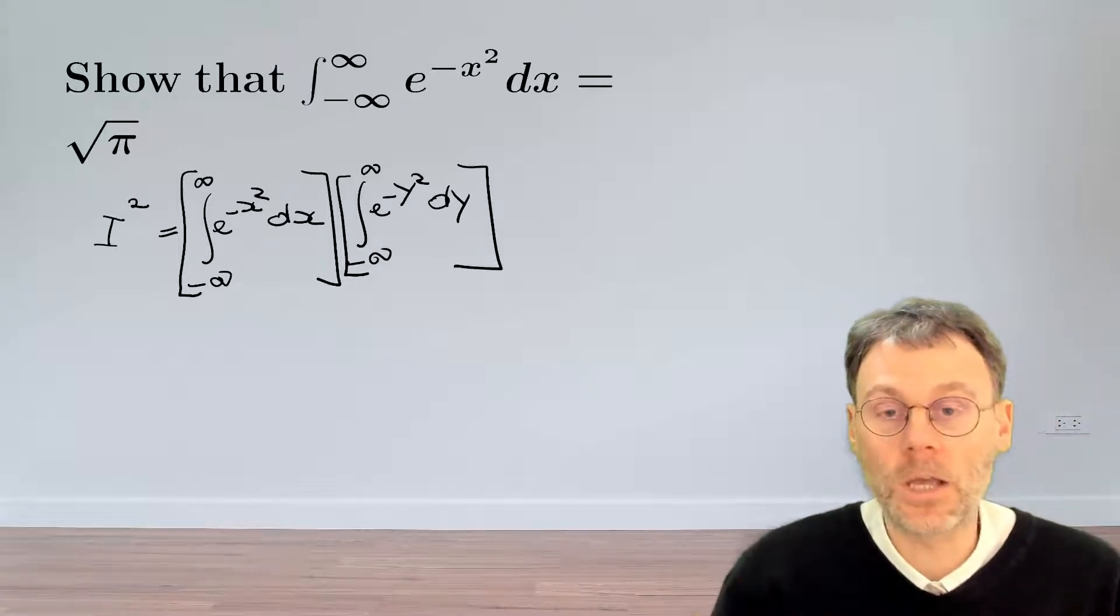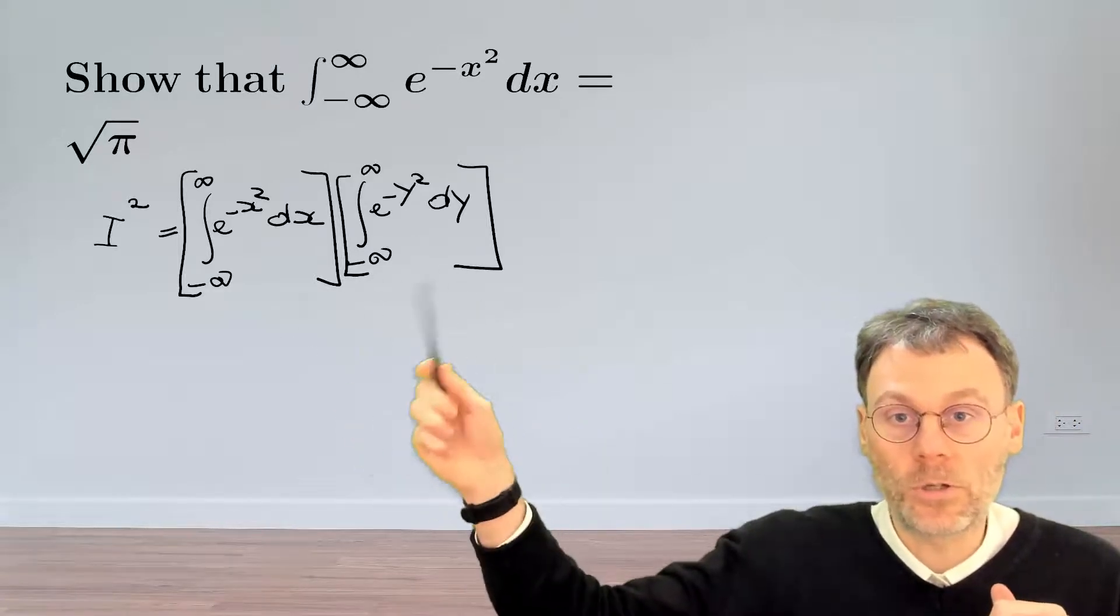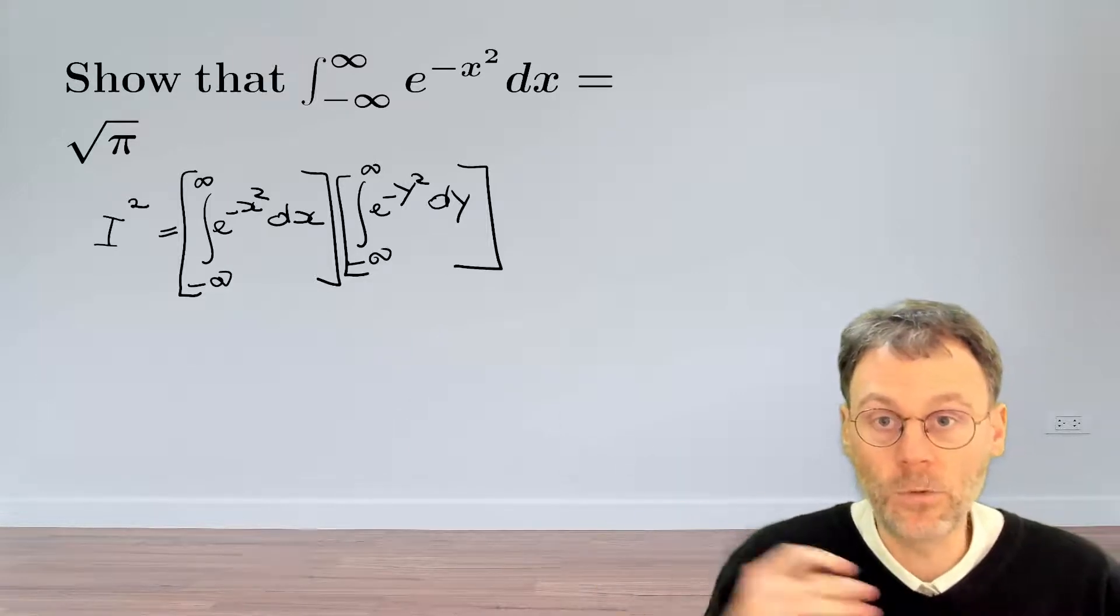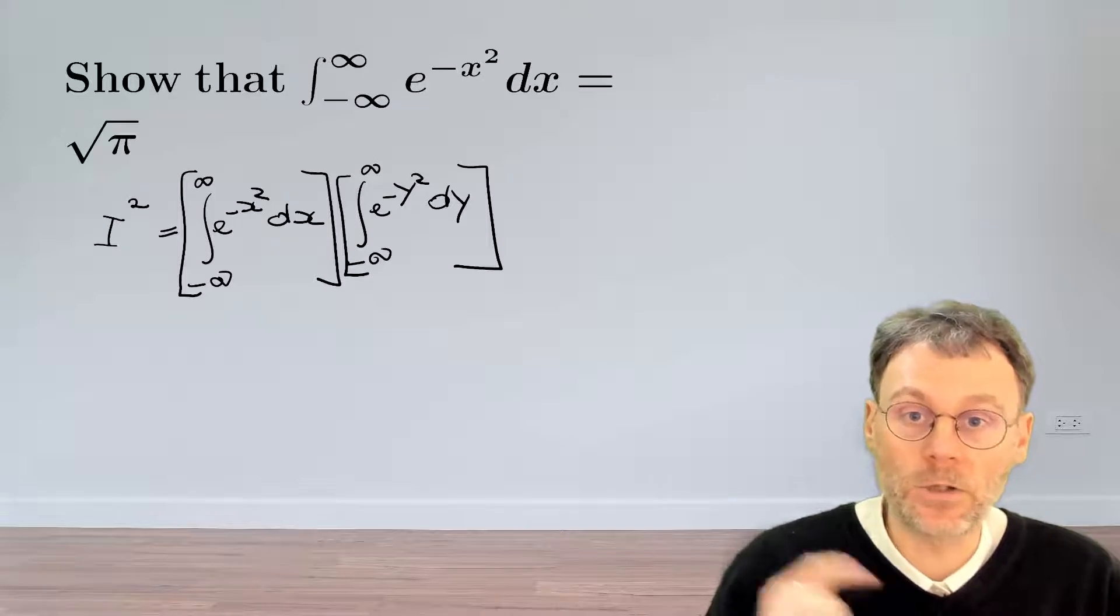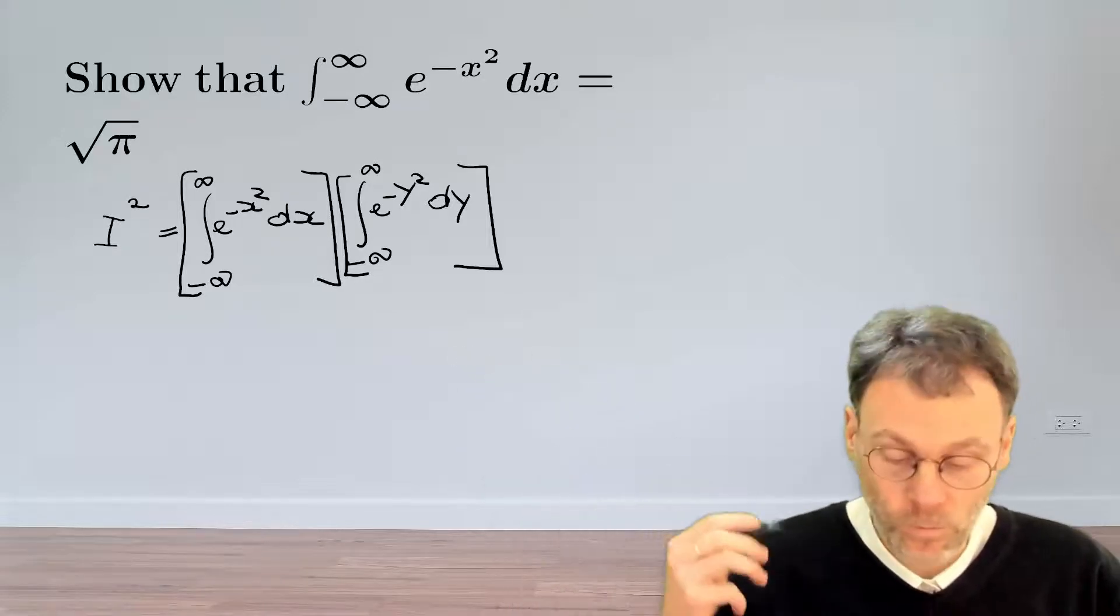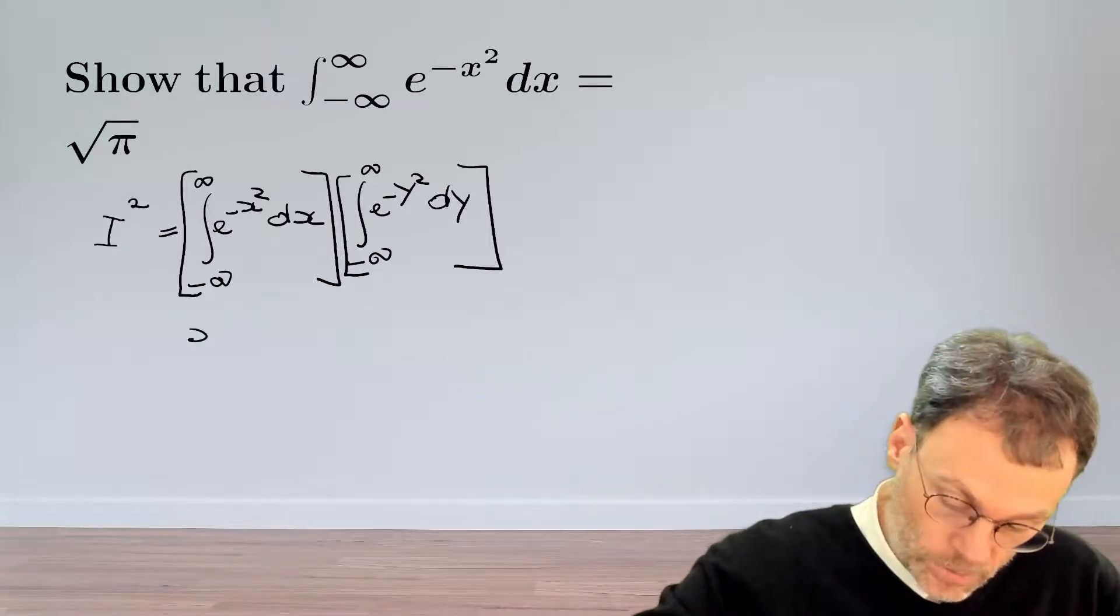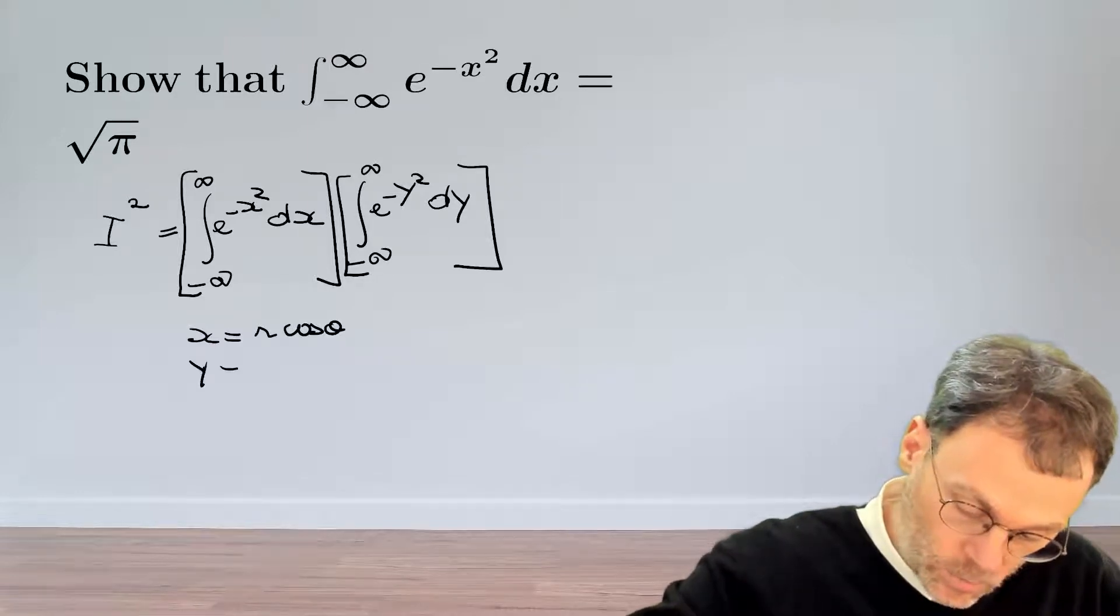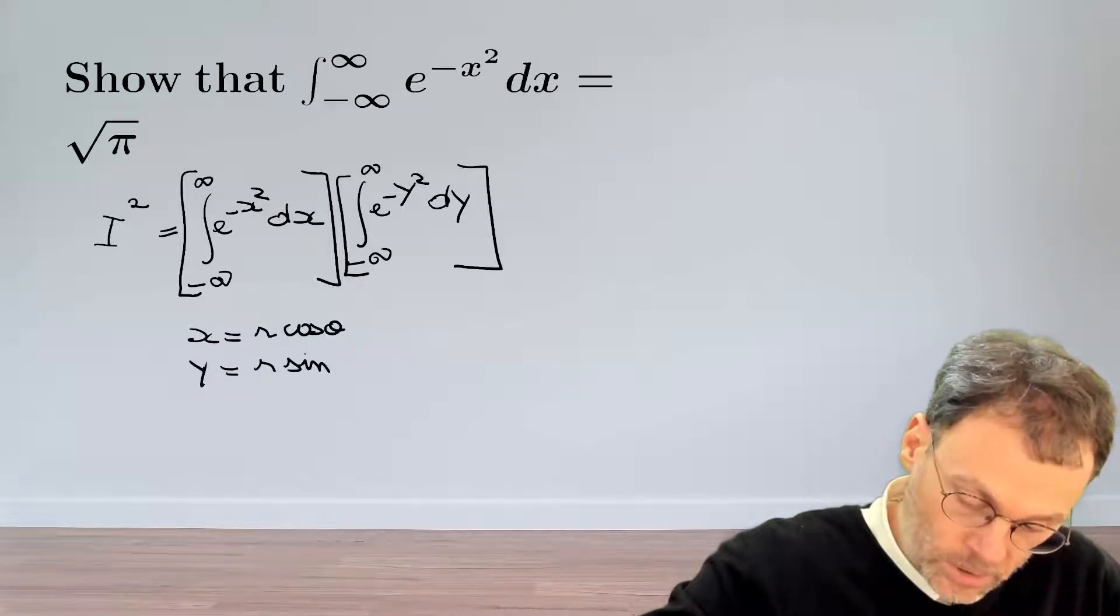That's the same of course, but now we can interpret the result as an integral over the xy plane. And then what we could do, just for fun, is converting that integral into polar coordinates. So with the substitution x is r cosine theta and y r sine of theta.